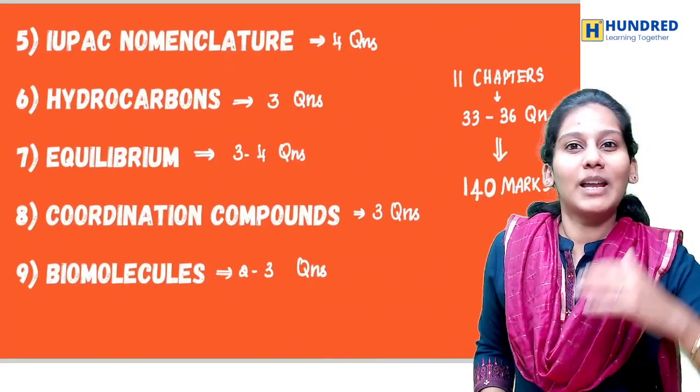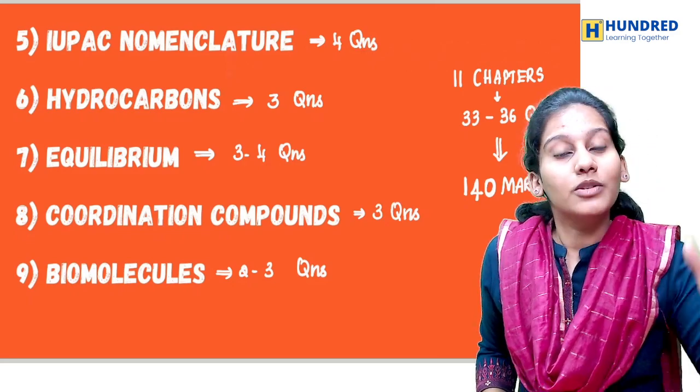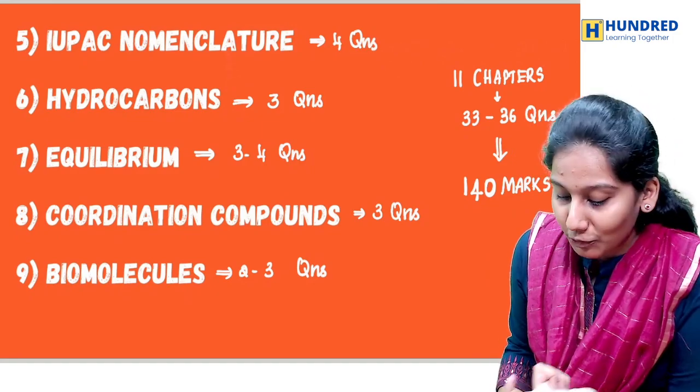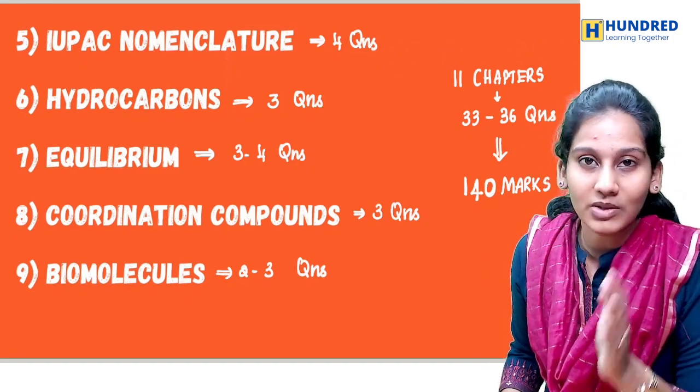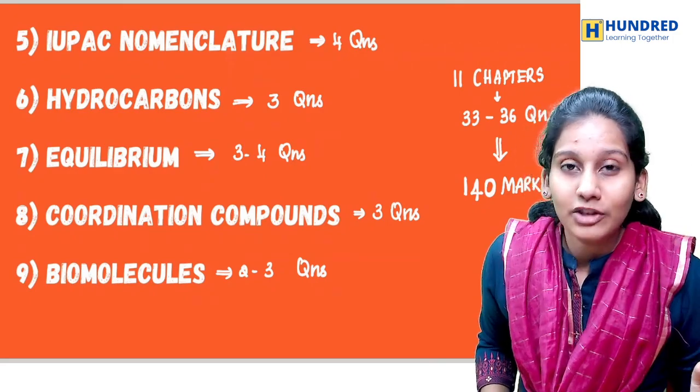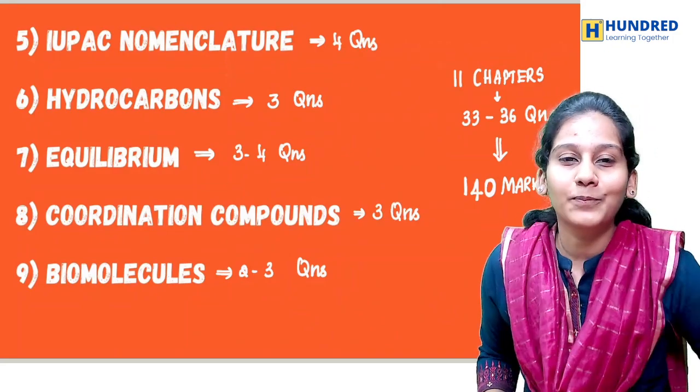Coordination compounds, Biomolecules, Chemistry in Biology - together in these chapters we have to expect 36 questions. Here around 40 marks. With negative markings minus, 130 guaranteed. Yes, clear. That is Biology.